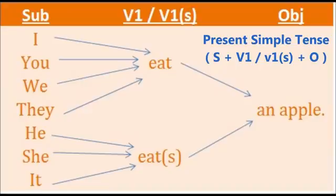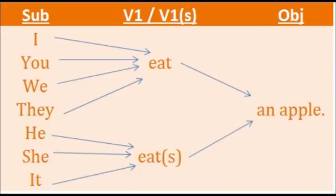The structure for this tense is subject plus V1, or V1 plus S plus object. For example: I eat an apple, you eat an apple, we eat an apple, they eat an apple. He eats an apple, she eats an apple, it eats an apple.